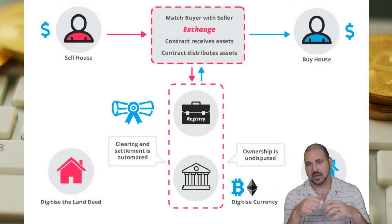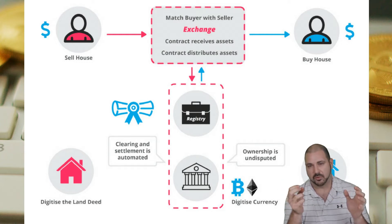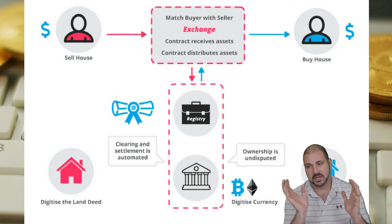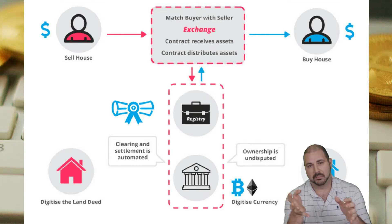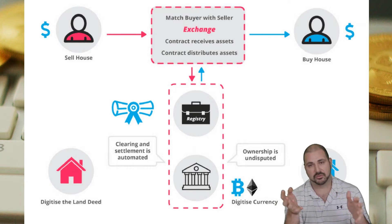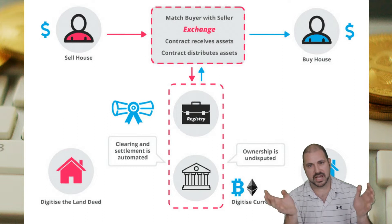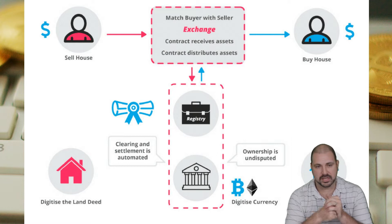We can do this in a ton of different ways — think of any normal contracts and make them smart contracts. It's really hard to get stiffed in business because they have to lock up the Bitcoin, Ether, or whatever cryptocurrency is in that smart contract. As long as conditions are met they get paid, and if something changes both parties have to agree to modify the contract.